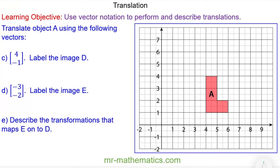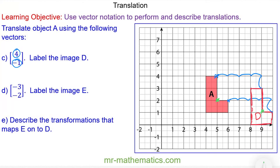Now copy the grid using squared paper and translate object A by the translation vector (4, -1). Pause the video and resume when you're ready. For this question we pick a vertex and move it 4 to the right and 1 unit down — 1, 2, 3, 4 and 1 down. We'll pick a different vertex, move it 4 to the right and 1 unit down, then recreate the object and label it image D. We can check by picking a further vertex and confirming it aligns when we go 4 to the right and 1 unit down.